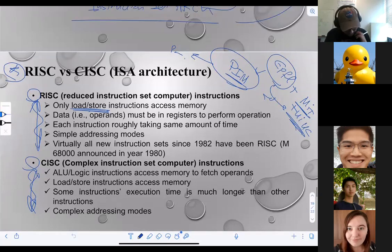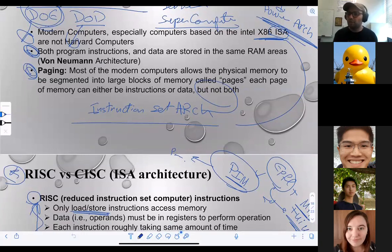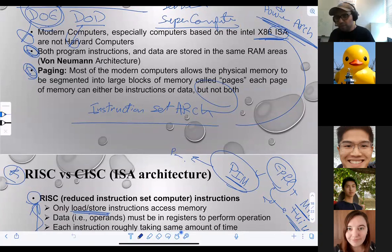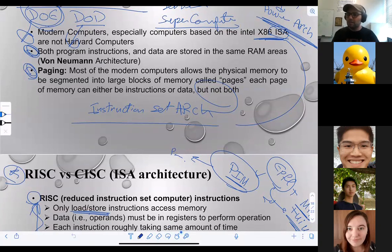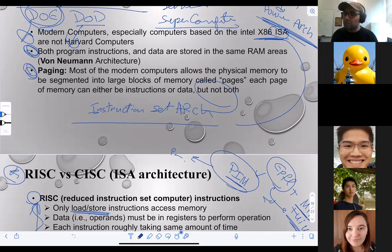Now we're going to continue and resume our discussion about chapter one. If you guys remember, we were talking about transistors and then we came to the point that there are two different types of architecture: one is called Von Neumann architecture versus the Harvard architecture. The Von Neumann architecture was created by the mathematician Von Neumann in 1950-something, and he came to the conclusion that we need to build an ISA — Instruction Set Architecture — that would run as a processor. He said the memory we have is going to be a large pile of storage elements storing data and instructions.